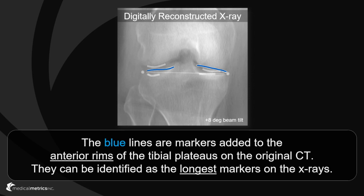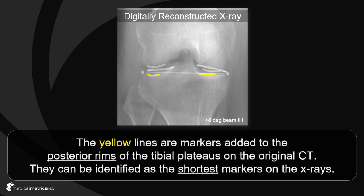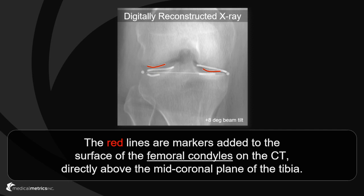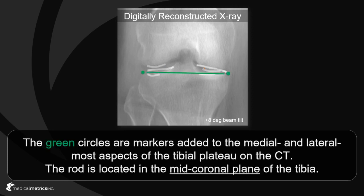The blue lines highlight the markers added to the anterior rims of the tibial plateau; they can be identified as the longest markers on the radiographs. The yellow lines highlight the markers added to the posterior rims of the tibial plateau; they can be identified as the shortest markers on the radiographs. The red lines highlight the markers added to the surfaces of the medial and lateral femoral condyles directly above the mid-coronal plane of the tibia. The green circles highlight the markers added to the medial and lateral most aspects of the tibial plateau.